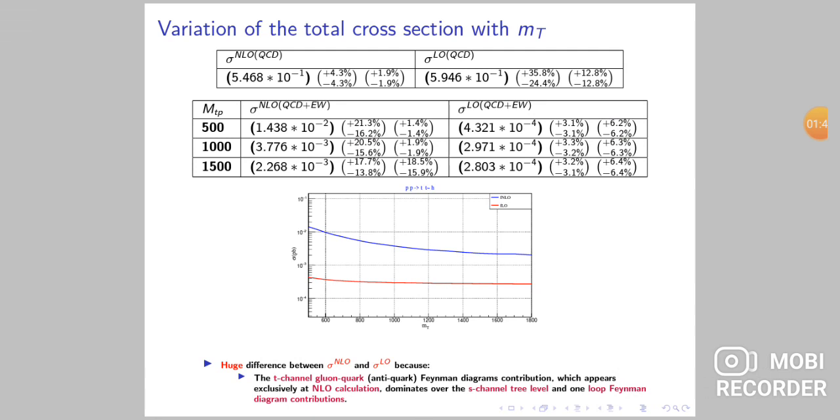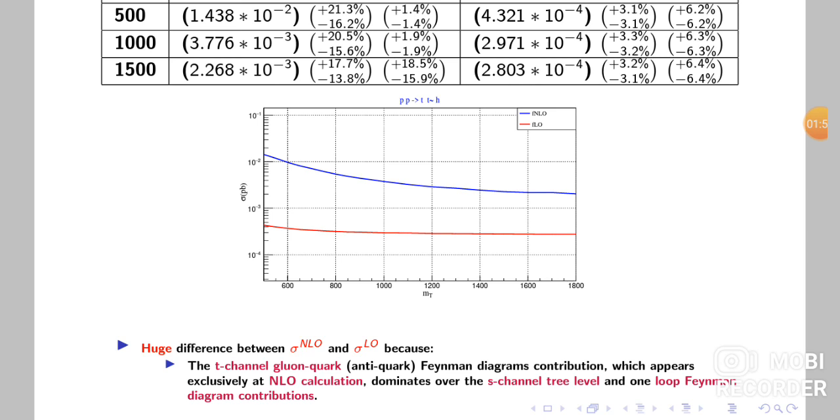In this part, let's see the variation of the total cross-section with MT. From the table and the figure, we observe a huge difference between cross-section LO and NLO because the T-channel gluon-quark Feynman diagrams contribution,